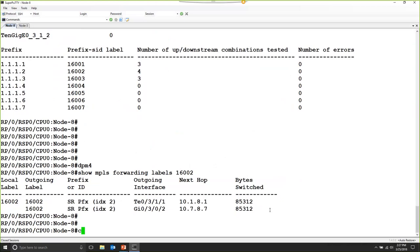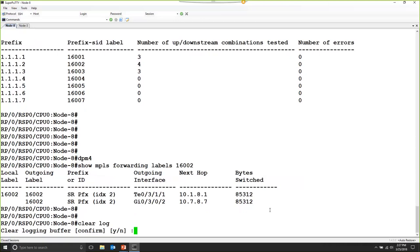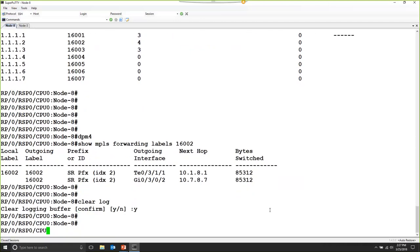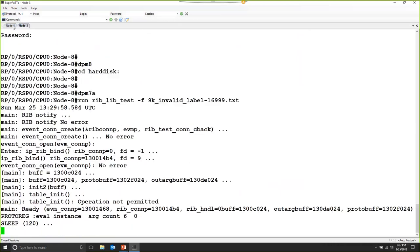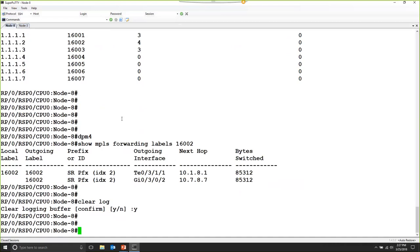I'm going to clear our logs so we can see the alarms that are going to be raised because of the DPM process. I'm going to use an internal utility on the router to create the inconsistency that we mentioned a moment ago.